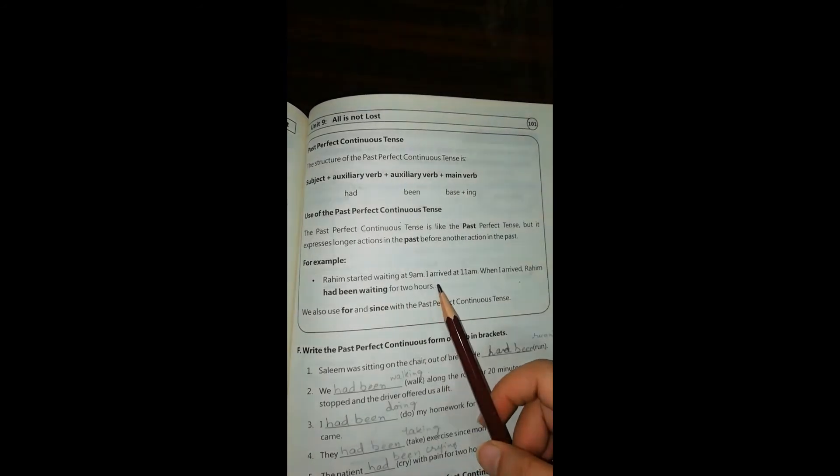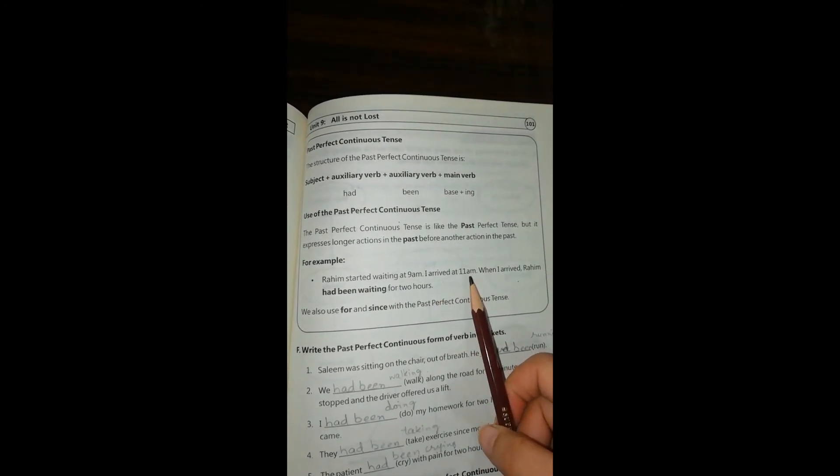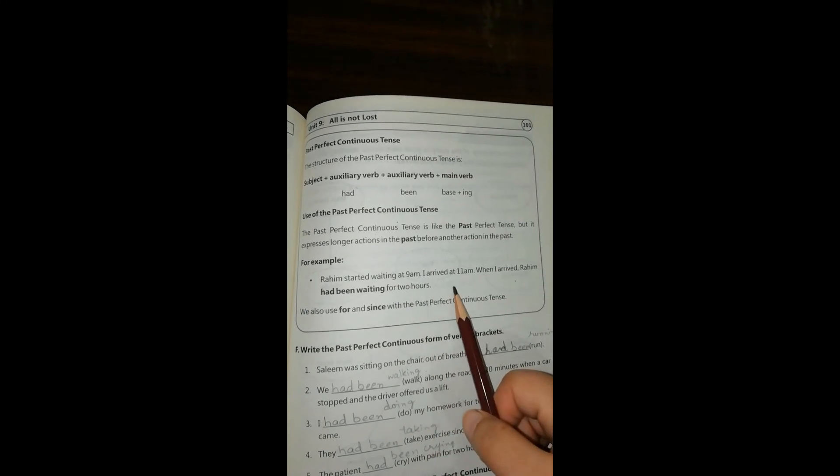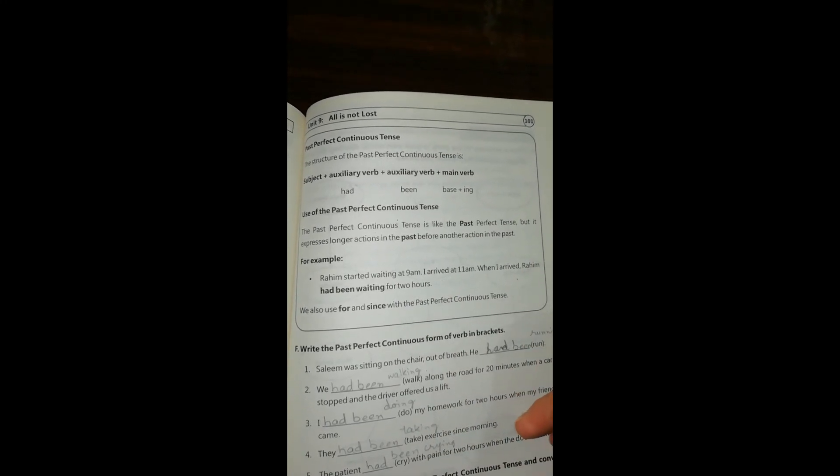Use of the past perfect continuous tense: it's used to show that an action was going on in the past. Suppose Raheem started waiting at 9 a.m., I arrived at 11 a.m. When I arrived, Raheem had been waiting for two hours. It tells that when the person came, the other person was already waiting there.